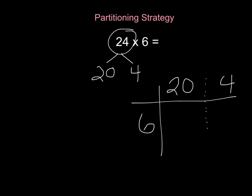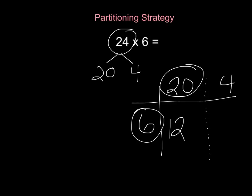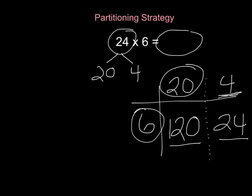I'm going to make a little divider down the middle so I can keep my numbers separate. First step, I multiply 6 times 20. If I know 6 times 2 is 12, I know that 6 times 20 is 120. Next I multiply the 6 times the 4 — 6 times 4 is 24. If I add both of these numbers together, I will get the answer of 24 times 6: that's 120 plus 24.